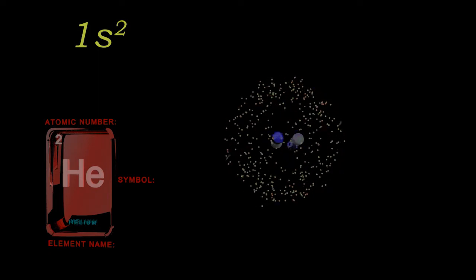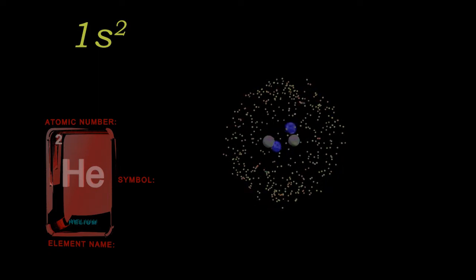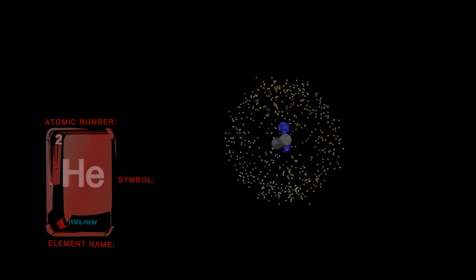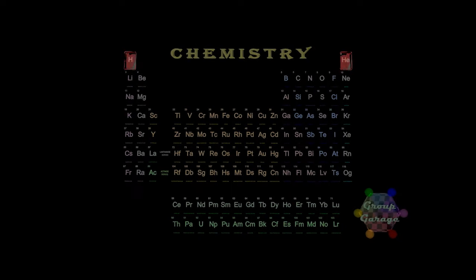From the Pauli exclusion principle, we know for two electrons to be in the same orbital, they must have a different property which we call spin. One is spin up, and one is spin down.